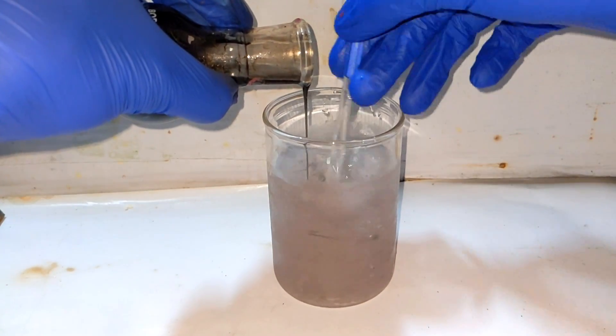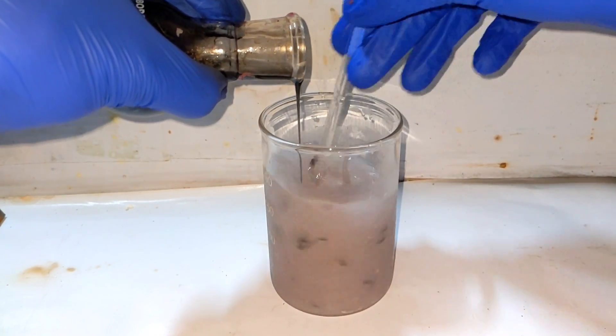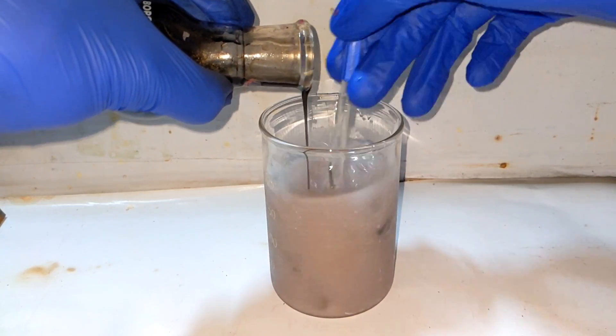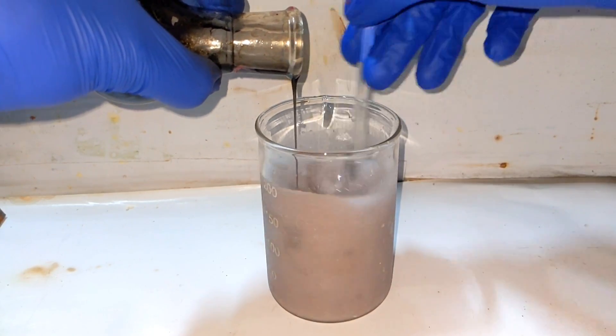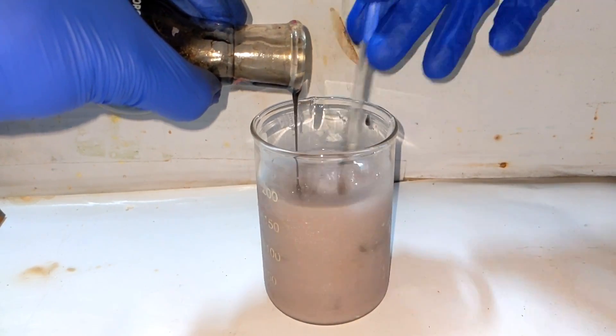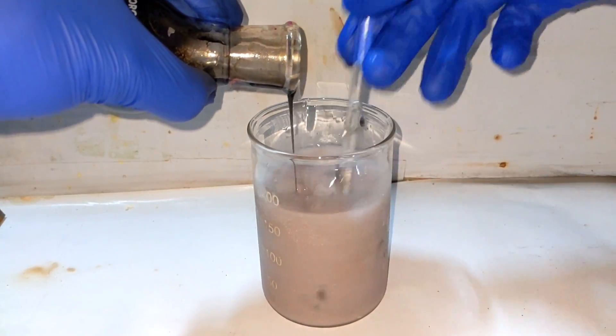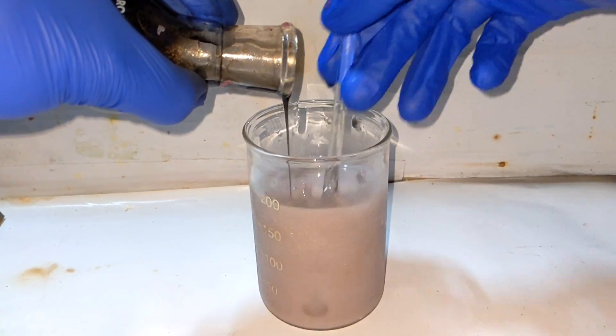Immediately upon adding the contents of the flask into the beaker, lots and lots of crystals start to precipitate out. This is actually the crude sulfanilic acid. The precipitated crystals have an off-white color as you can see.